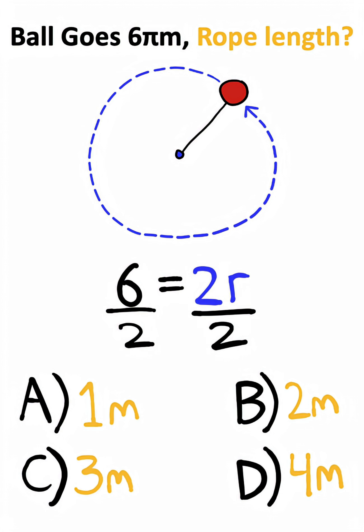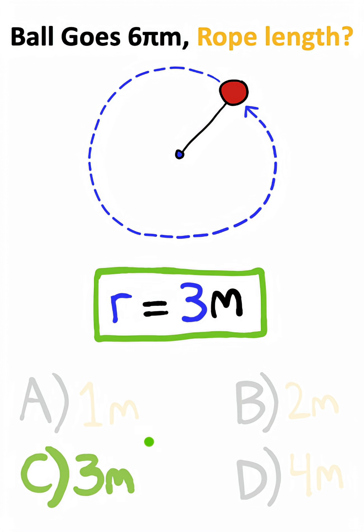Solving for the radius will give me the approximate length of the rope, which is 3 meters, or option C.